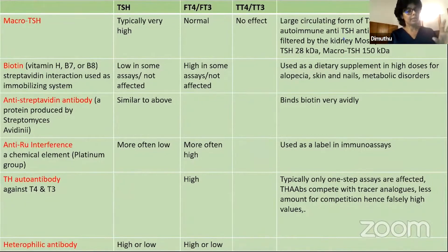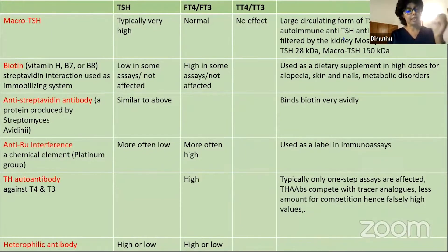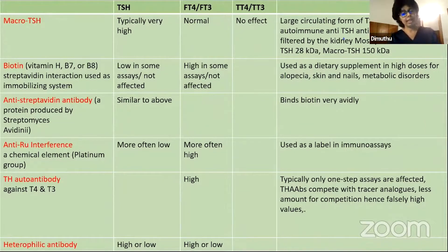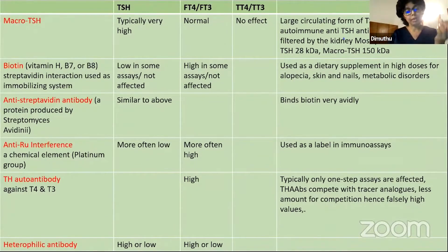Streptavidin is also used as an immobilizer, and antibodies could be formed against it, as we use it as a biotin-streptavidin complex. Ruthenium is used as a label, so antibodies can be formed against ruthenium as well. Against thyroid hormones T4 and T3, autoantibodies could also be formed. And there are heterophil antibodies — in these conditions, we see antibody formation.